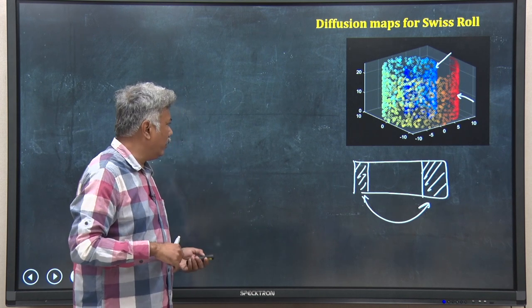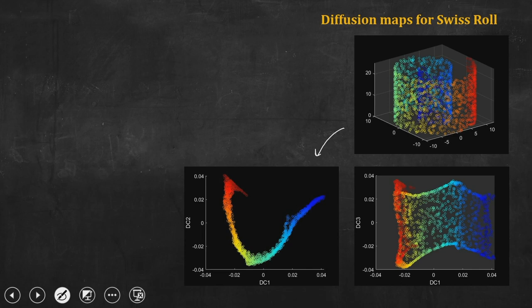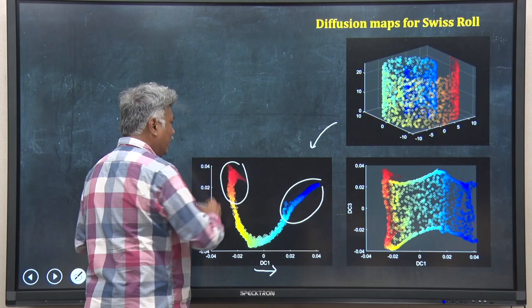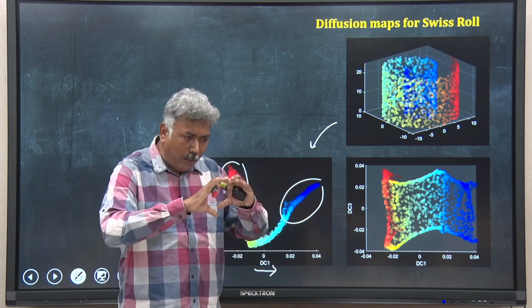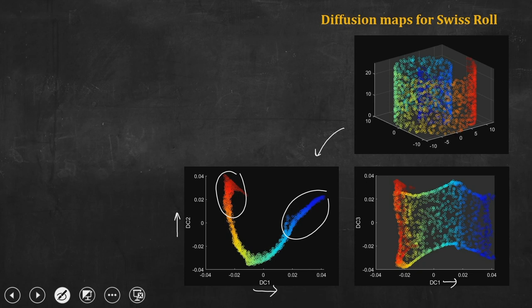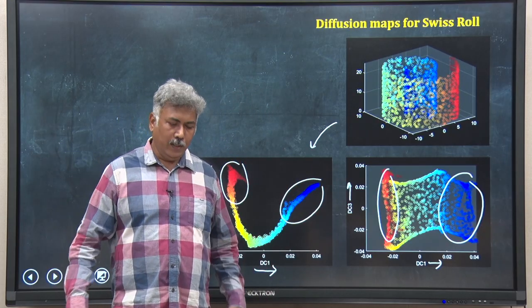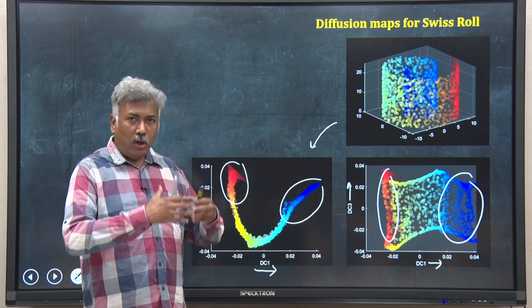If I apply the diffusion maps method on this, I get this type of result. I am representing the same Swiss roll data in two new dimensions: DC 1 and DC 2. You can easily see the algorithm has segregated the blue data from the red data — even in this representation they are far away from each other, as if I have opened up the Swiss roll. Similarly, representing DC 1 against the third new coordinate, the blue and red data are separated and all other data points are nicely arranged in between. In this way, diffusion maps has used local data to give a global representation of the whole dataset.